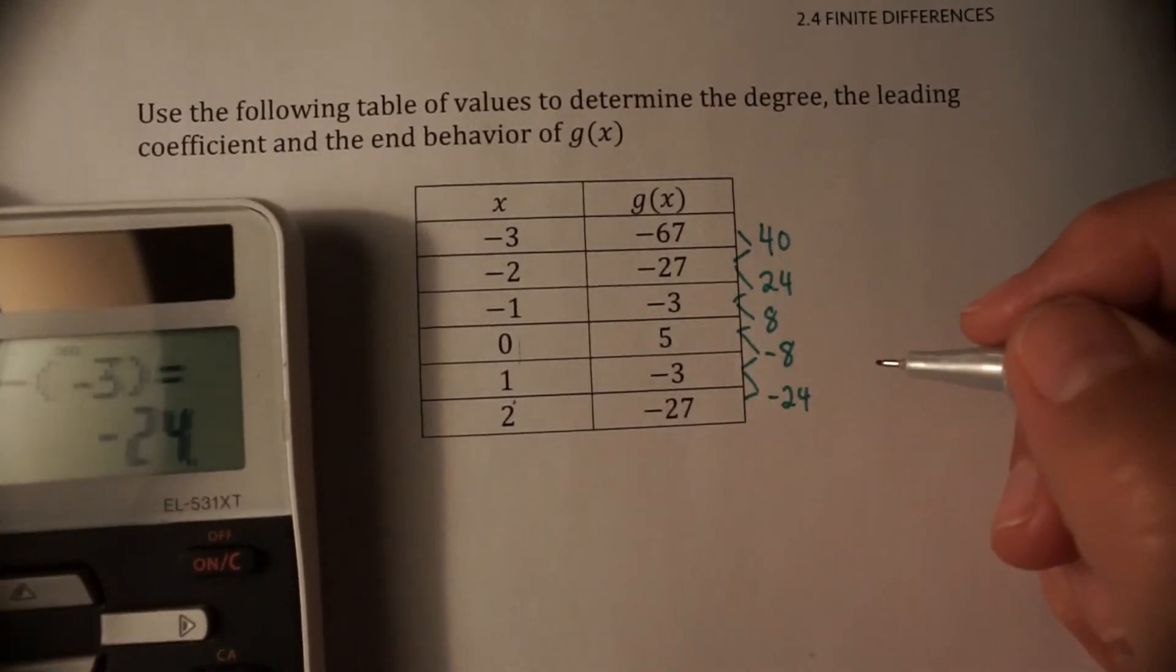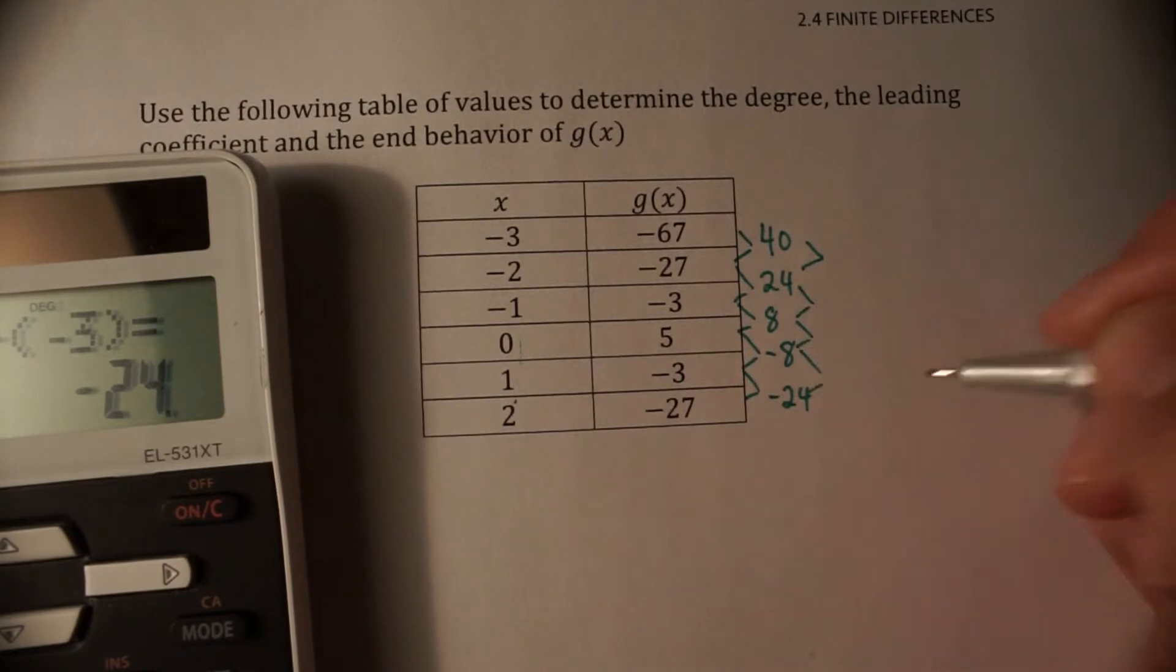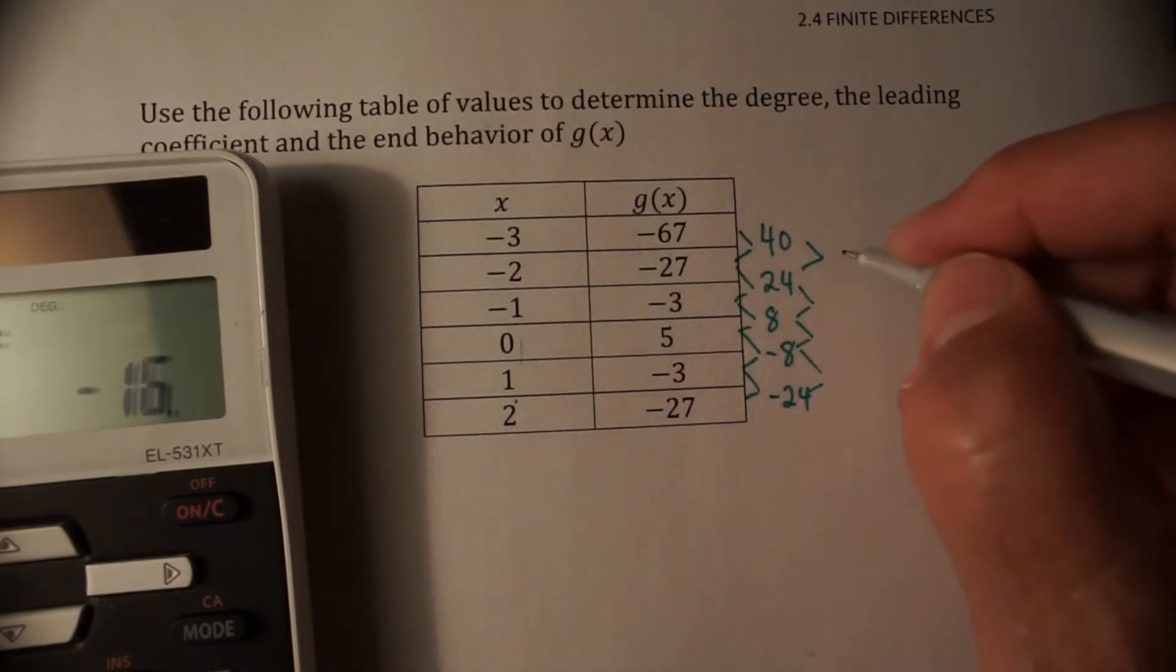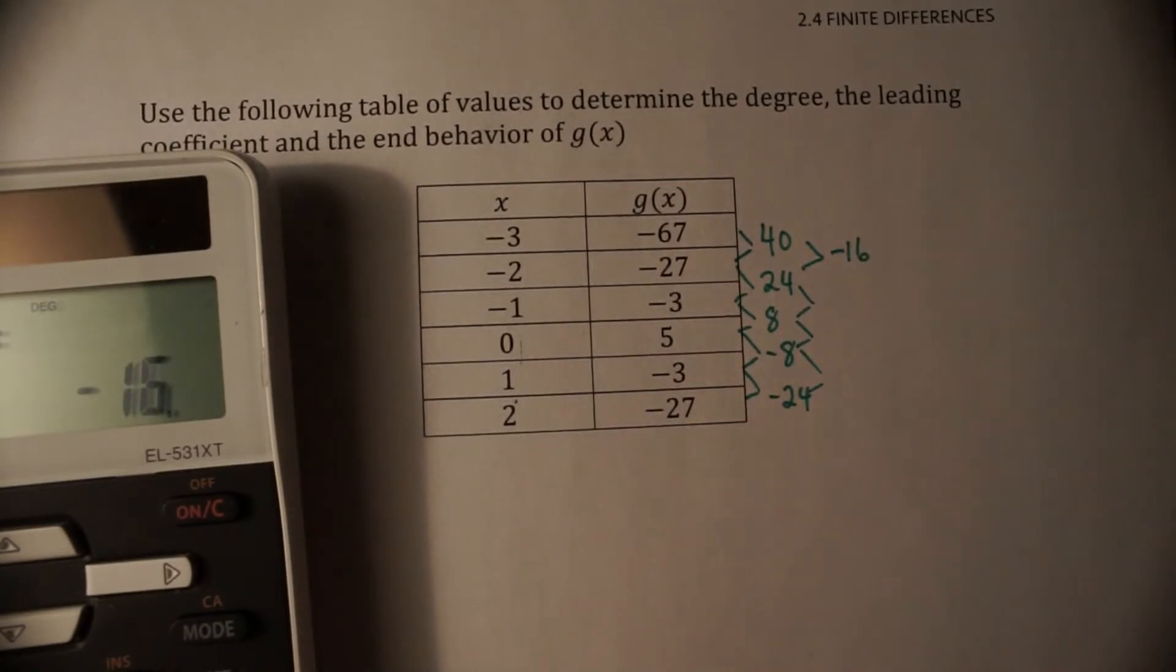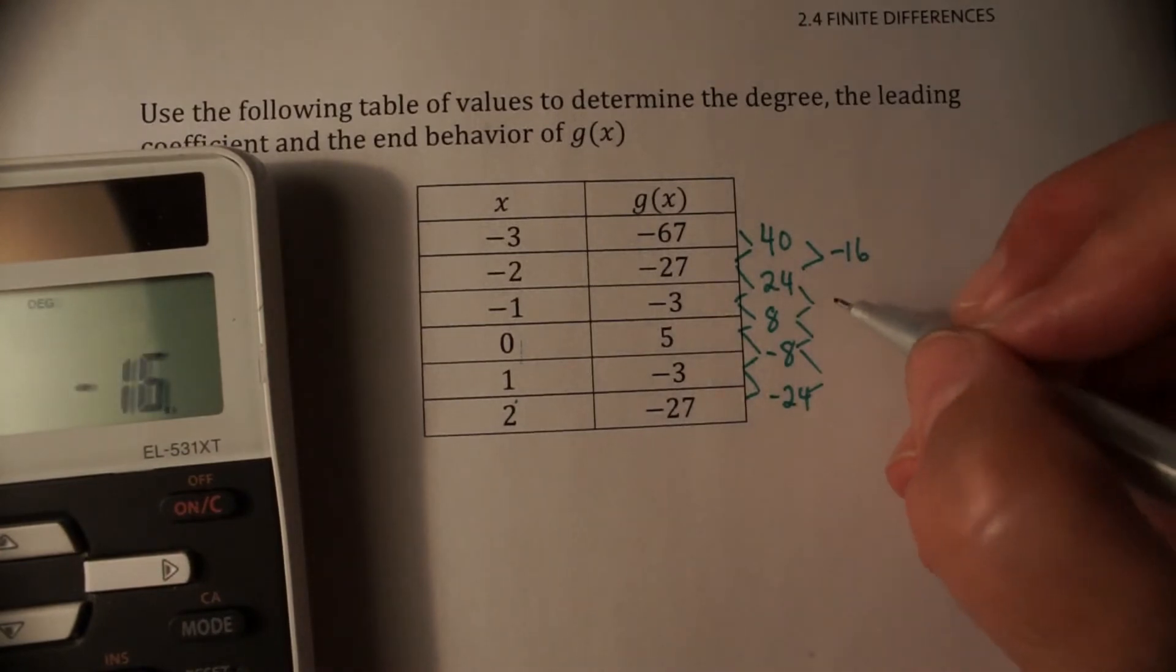Don't try to make shortcuts with these because those little negative signs, and then if one thing screws up, the whole thing has gone bad. So 24 minus 40, negative 16. 8, oops, 8 minus 24. Oh good, negative 16. Everything's good.